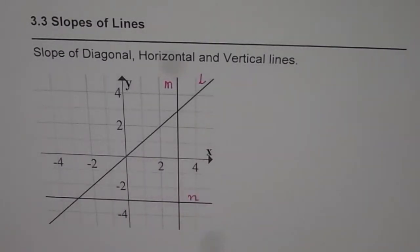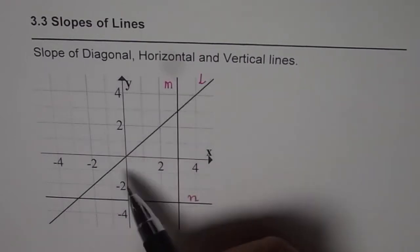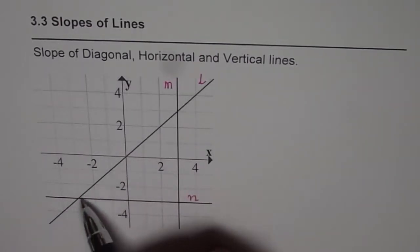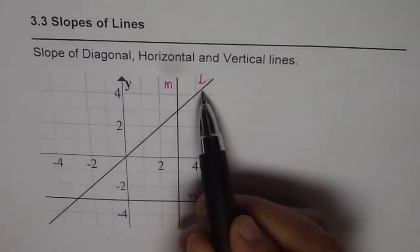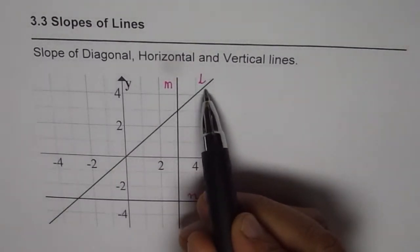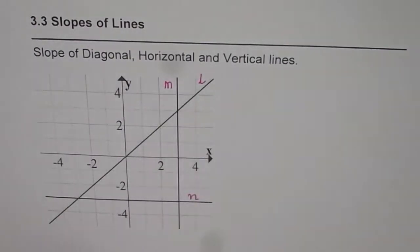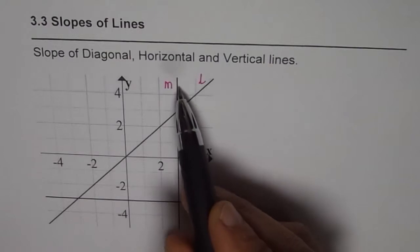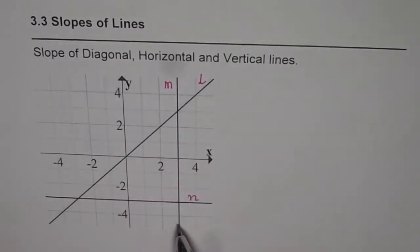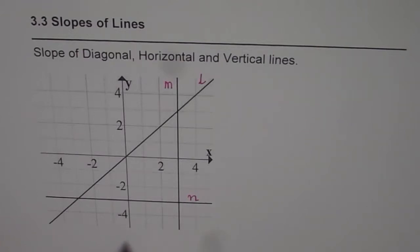We will find the slope of each one of them. For this diagonal line, which is rising, we are expecting a slope of a positive number — slope is positive. For the vertical line we expect an undefined slope, and for a horizontal line we expect a slope of 0.